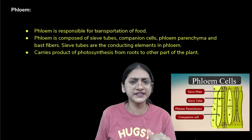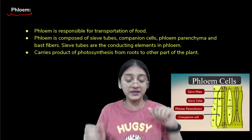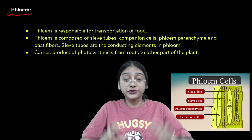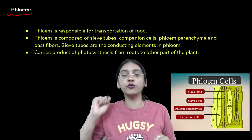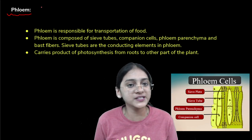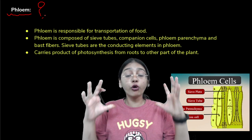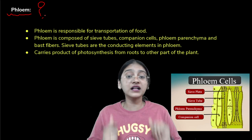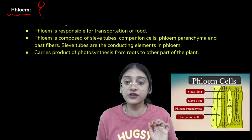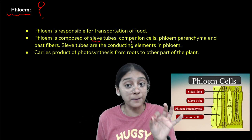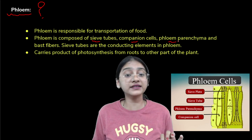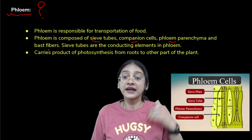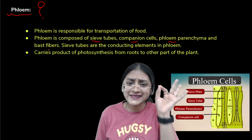Now let's talk about transportation of food molecules. Transportation of food molecules happens with the help of a tissue called phloem. Phloem is responsible for transportation of food. It is a complex permanent tissue, just like xylem, and is made up of different types of cells: sieve tubes, companion cells, phloem parenchyma, and phloem fibers, also called bast fibers.